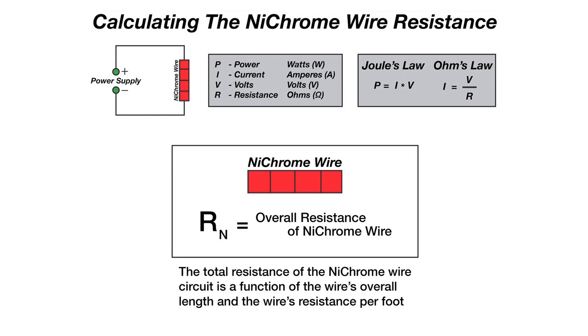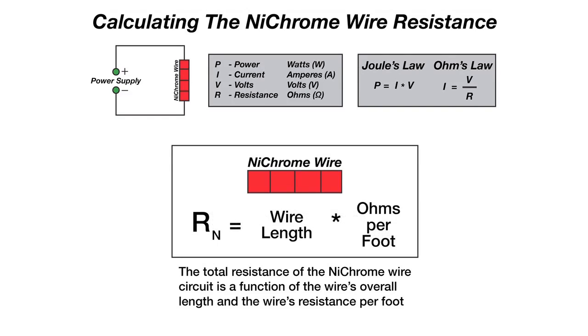The first step is to determine the overall resistance of your hotwire foam cutter's nichrome circuit. If you already have your cutter built, simply use a multimeter to test the resistance which is measured in ohms. But if you're calculating by hand, please consider the following. The overall resistance of the nichrome wire circuit is a function of the wire's overall length and the wire's resistance per foot. In other words, total resistance equals wire length times ohms per foot.